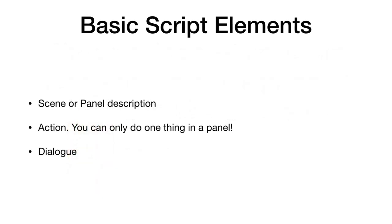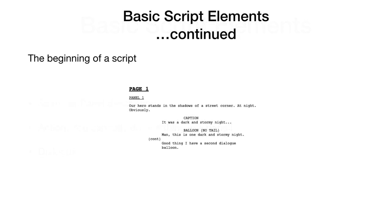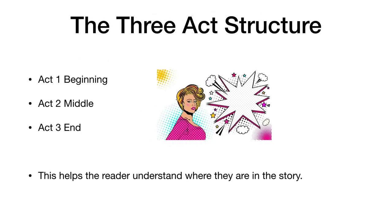So let's look at a script example. Your basic script elements are made up of three simple elements: the scene or description of the panel; the action, or what action is taking place in the panel; and the dialogue, or what the actors are saying in the panel, if anyone. Here's a script example — panel 1, taken from the Scrivener template for a comic script. It's the three-act structure we're looking at. This sounds a lot like a normal book, and in fact it is, but it works equally well for comics.